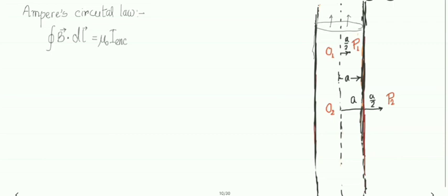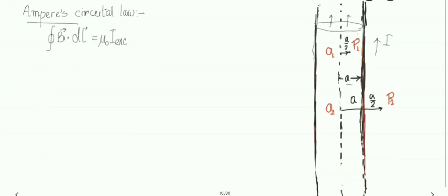If capital I is the current flowing through the wire, let us check what you have learned before: the Ampere's circuital law. The closed integral of B·dl equals μ₀ times the enclosed current. For an infinitely long straight current-carrying wire carrying current I, the magnetic field at a perpendicular distance r from the wire is μ₀I divided by 2πr.